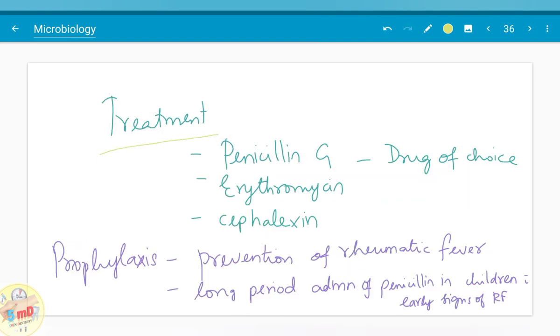Moving on to the treatment part of Streptococcal pyogenes infection. Penicillin G is the drug of choice, amoxicillin is also used. In case of penicillin allergy, erythromycin is used, cephalexin is also used. Moving on to prophylaxis: in order to help in the prevention of rheumatic fever in children with early signs of rheumatic fever, long period administration of penicillin is advised.